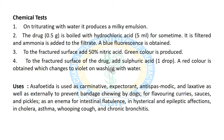Now we will discuss the various chemical tests for Asafoetida. In the first test, we triturate Asafoetida with water and it produces a milky emulsion. In the next test, we boil Asafoetida with hydrochloric acid, filter it, add ammonia solution, and it shows blue fluorescence. In the next test, crude Asafoetida is treated with 50% nitric acid and it shows green color. In another test, treatment with sulfuric acid shows red color which converts to violet after washing with water.